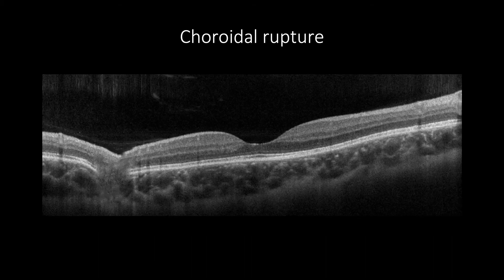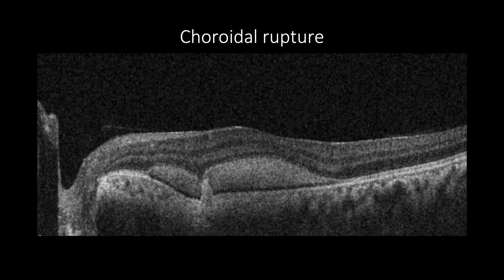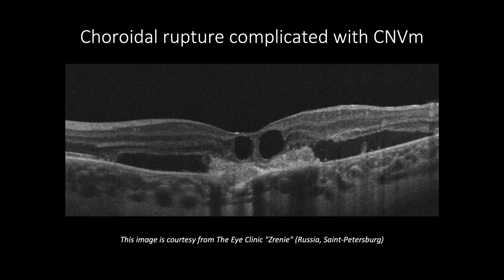Some choroidal rupture cases may be presented with concave contours with a wide area of external limiting membrane, ellipsoid zone, and RPE/Bruch's membrane loss. In acute cases, this protrusion may combine with subretinal blood, which appears as subretinal hyperreflective fluid with smooth borders. Some choroidal rupture cases get complicated with subretinal choroidal neovascularization, which may be presented with subretinal fluids and a subretinal hyperreflective mass. As in this case, there is a choroidal rupture in the form of RPE protrusion in a pyramid shape causing discontinuity of RPE, subretinal hyperreflective mass representing subretinal choroidal neovascularization, with subretinal fluids, blood, and intraretinal cystic changes.